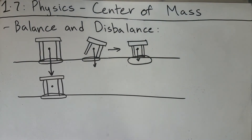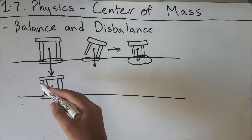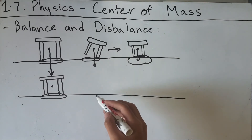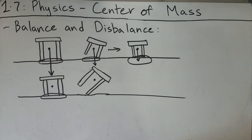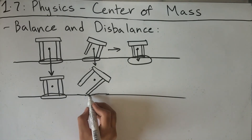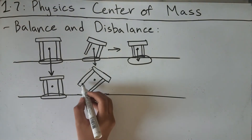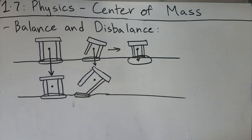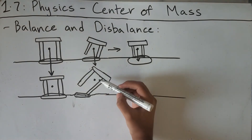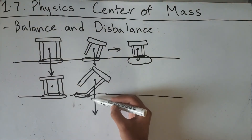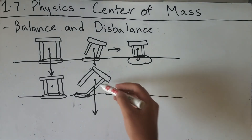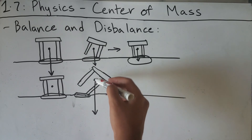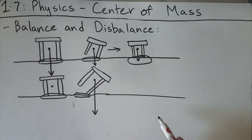Now using the same table, if we lift the edge at a higher angle, things are different. The base of support extends from the pivoting leg corner to its perpendicular, which is a much smaller area. This time the center of mass — or center of gravity — falls outside the base of support. There is now a disbalance in moments on the left and right side, and the table will topple in that direction instead of returning to its original balanced position.